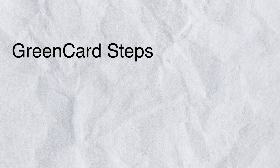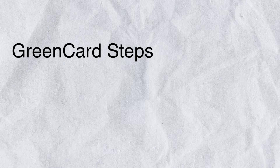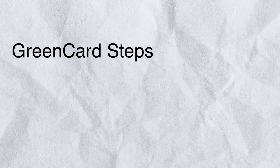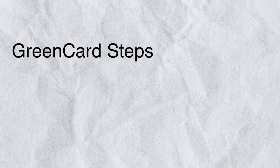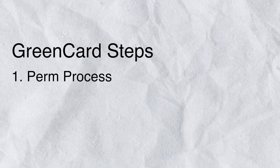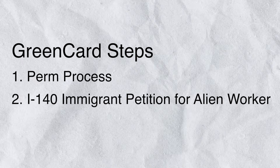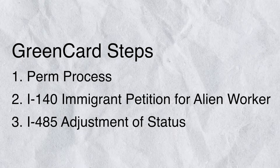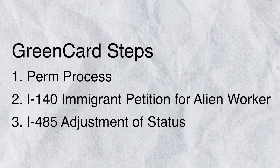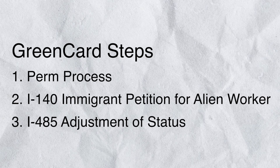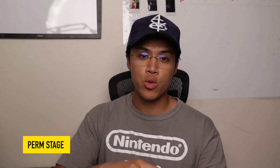There are three big major steps when it comes to getting your green card. The first one is the PERM process. The second one is filing your I-140. And the third one is adjusting your status via form I-485. The first stage is the PERM process, which is the longest and also the most complicated stage of the green card process.